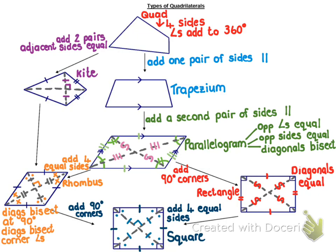The easiest way to understand this quadrilateral family tree is to remember who's related to whom. You start with a quadrilateral: go to the left and you get a kite, and if you add four equal sides to a kite, you go down to a rhombus. So a rhombus is actually a type of kite. A rectangle is a type of parallelogram, and a rhombus is a type of parallelogram. And a square is a type of rectangle, rhombus, parallelogram, trapezium, and quadrilateral. Then going to the side, you get a kite, and a rhombus is a very specific type of kite.